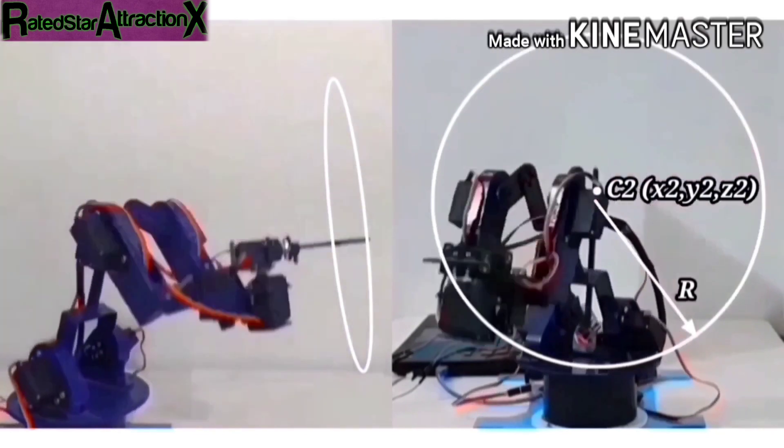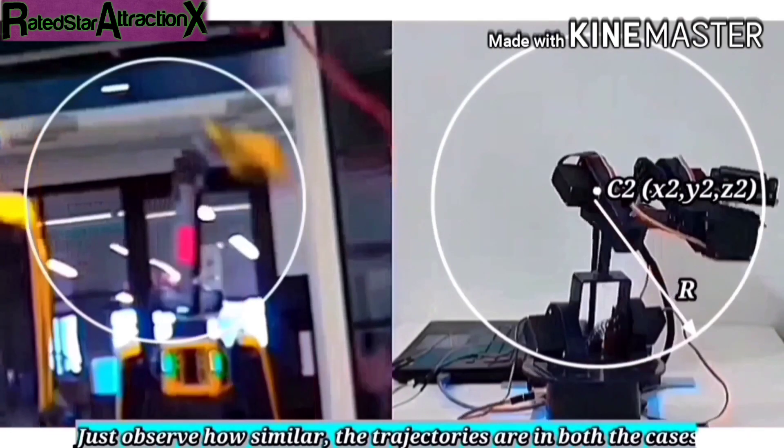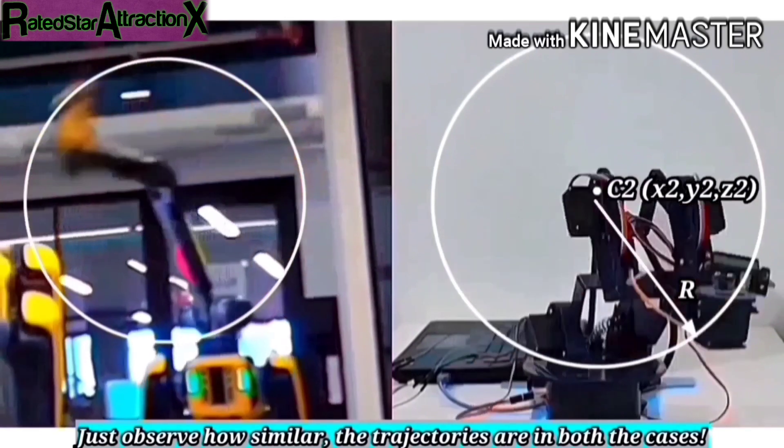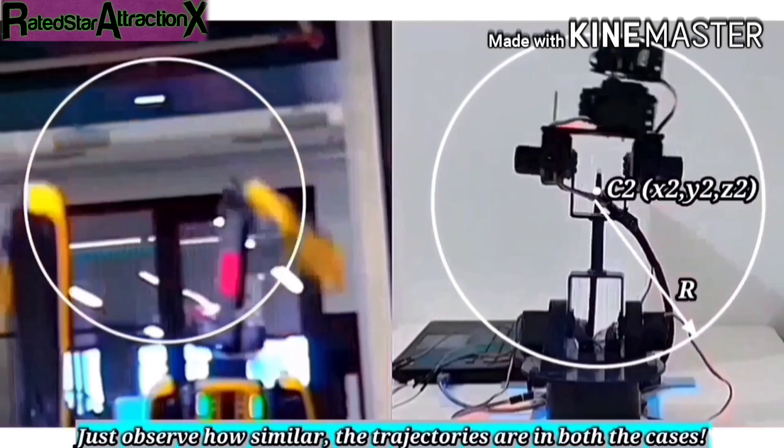Just observe how beautifully the end effector of the arm traces out the circular trajectories in the vertical plane. Just closely observe how similar both these arms function.